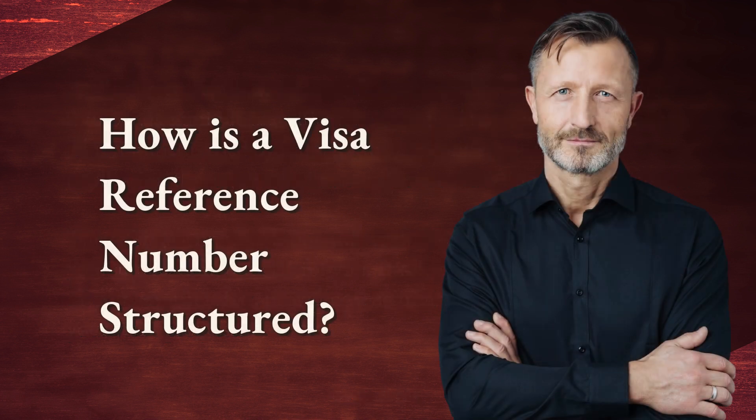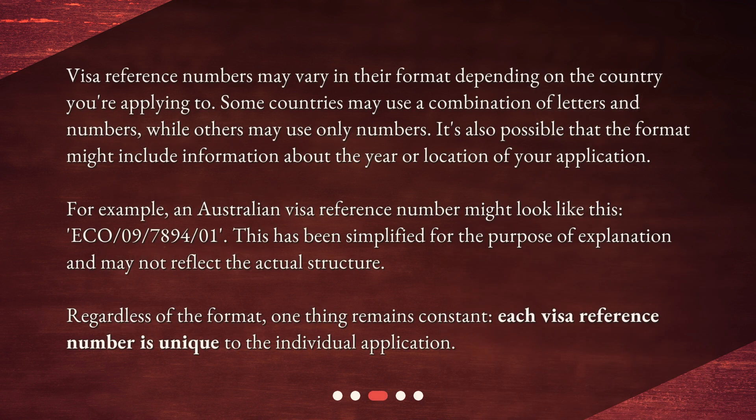How is a Visa Reference Number structured? Visa Reference Numbers may vary in their format depending on the country you're applying to. Some countries may use a combination of letters and numbers, while others may use only numbers. It's also possible that the format might include information about the year or location of your application. For example, an Australian Visa Reference Number might look like this: ECO-09-7894-01. This has been simplified for the purpose of explanation and may not reflect the actual structure. Regardless of the format, one thing remains constant: each Visa Reference Number is unique to the individual application.